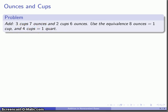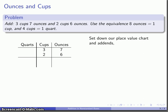So, as with other addition problems, we'll start out by setting down our place value chart with the addends, and we'll label our units: ounces, cups, quarts. We don't have any of those. 3 cups, 7 ounces, 2 cups, 6 ounces.